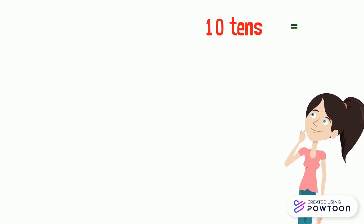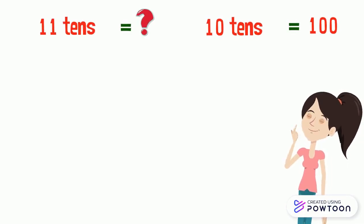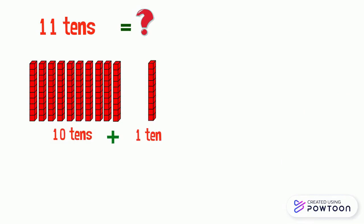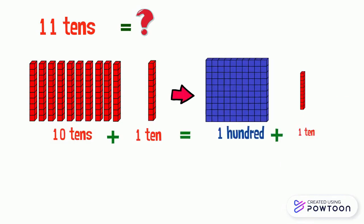We know that 10 tens equals 100, but what is 11 tens equal to? 11 tens is 10 tens plus 1 ten, which is 100 and 1 ten, which makes 100 plus 10, so it is 110.